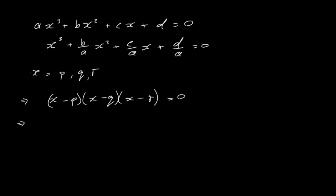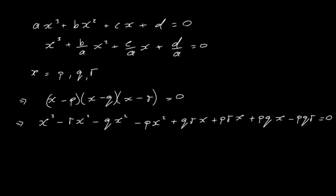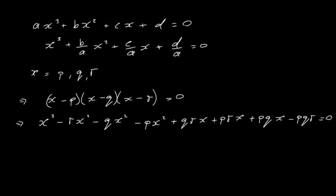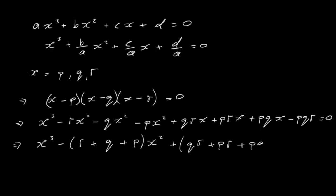Multiplying out those factors, we get x cubed, then the x squared terms, then the x terms, then the term independent of x. Factorizing gives x cubed minus (r plus q plus p)x squared plus (qr plus pr plus pq)x minus pqr equals zero.